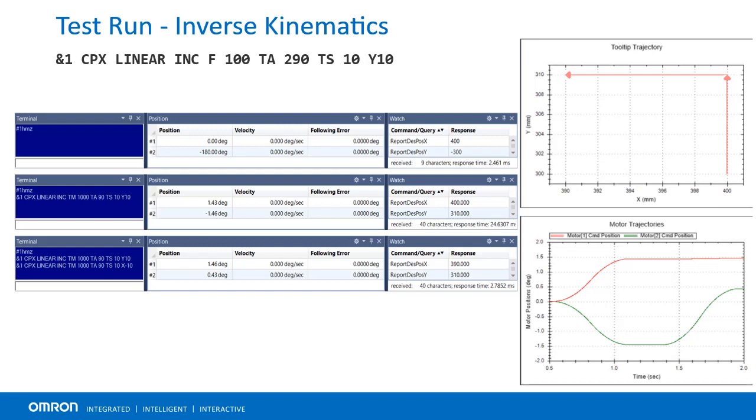X is 400 millimeters, Y is 300. The tooltip moves up 10 millimeters and then left 10 millimeters. The inverse kinematic equations control the motors to achieve this trajectory.